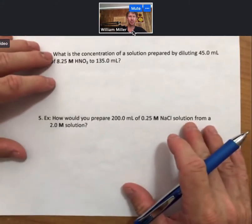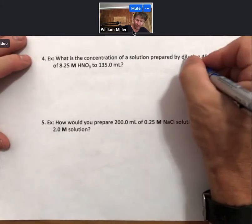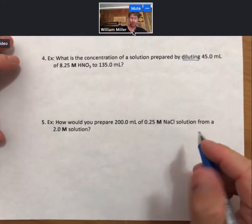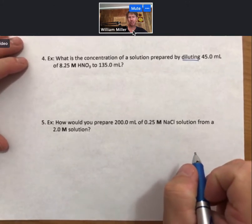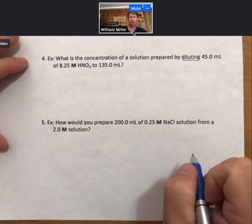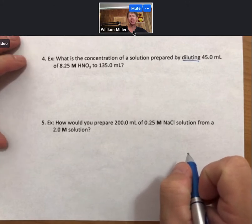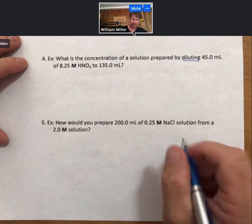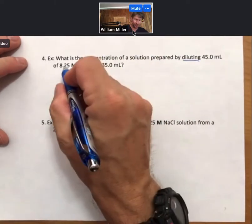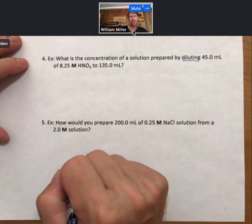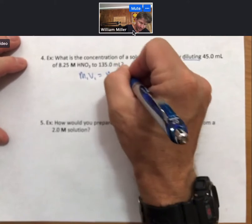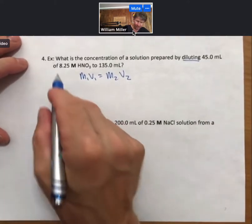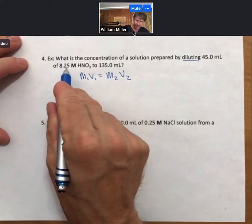Typical problem for dilution. We'll have the word dilution in it, or diluting in this case. What is the concentration of a solution prepared by diluting 45 milliliters of, which means multiply, 8.25 molarity nitric acid to 135 milliliters. My smaller volume will always be my more concentrated solution. So, and of tells me that these two numbers go together.